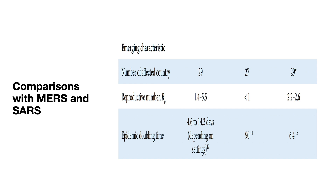The R0 or reproductive number for novel coronavirus is 2.2 to 2.6, while for MERS it is less than 1 and for SARS it is 1.4 to 5.5. This means one person with novel coronavirus can infect up to 2.6 others, while for MERS it is less than 1 and for SARS around 1.4 — which is the primary reason those two diseases never became a huge pandemic.